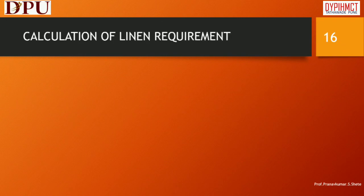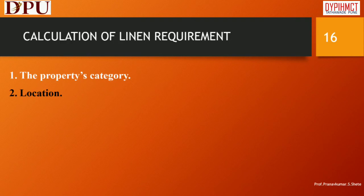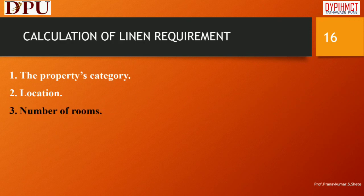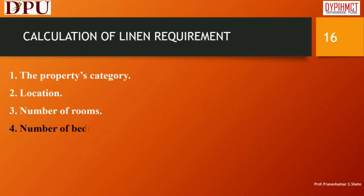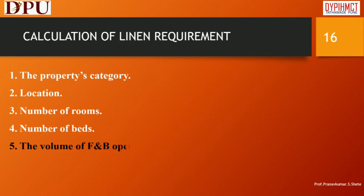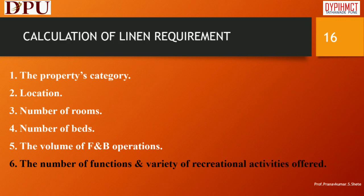Calculation of linen requirement depends on several factors: The category of hotel — business hotel, resort, transit hotel, or budget hotel — and its star category must be kept in mind while selecting linen and calculating for smooth operations. Location refers to where the hotel is built and the type of clientele, including whether occupancy is mostly family, business, or single travelers. Other factors include the number and type of rooms offered (single, double, suite, etc.), number of beds, the volume of F&B operations including types of outlets and banqueting facilities, and the number of functions and variety of recreational activities offered.